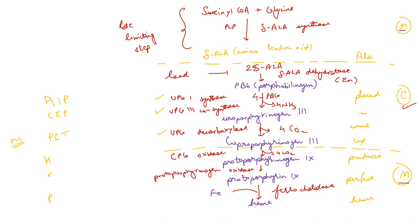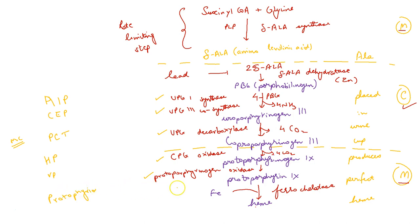H is hereditary coproporphyria, which occurs because of coproporphyrinogen 3 oxidase deficiency, and V is variegate porphyria, which occurs because of deficiency of protoporphyrinogen oxidase. Finally, P is protoporphyria, which occurs because of deficiency of ferrochelatase.